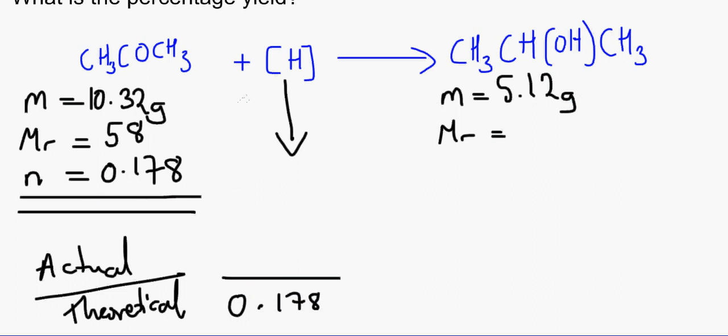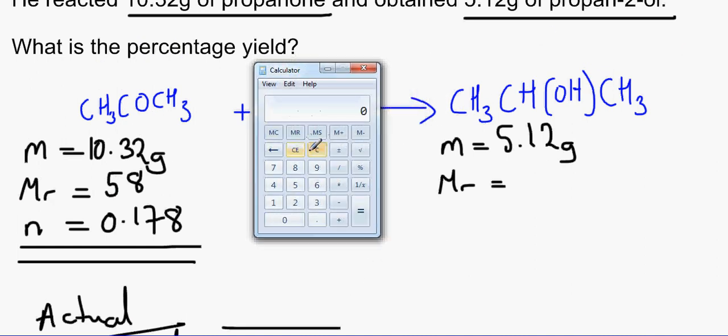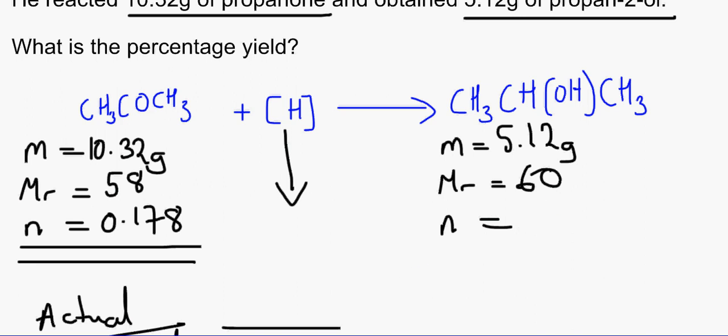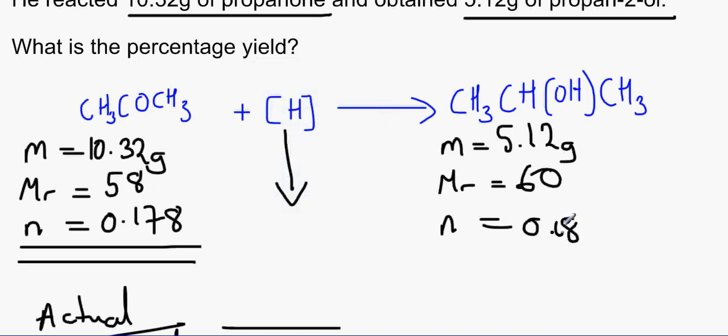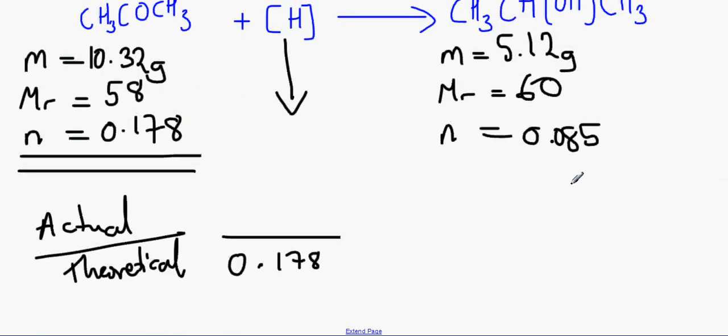And we're going to find out what the actual is right now. So the MR of the actual is 12 plus 3 plus 12 plus 1 plus 16 plus 1 plus 12 plus 3 to make 60. We can find out the number of moles by dividing 5.12 by 60, which will make 0.085. Don't forget the zeros because the zeros do matter, so it will be 0.08533333.